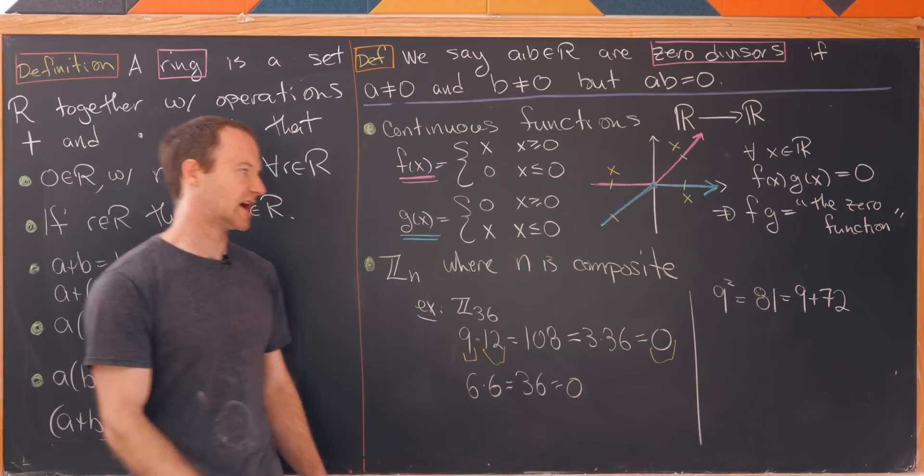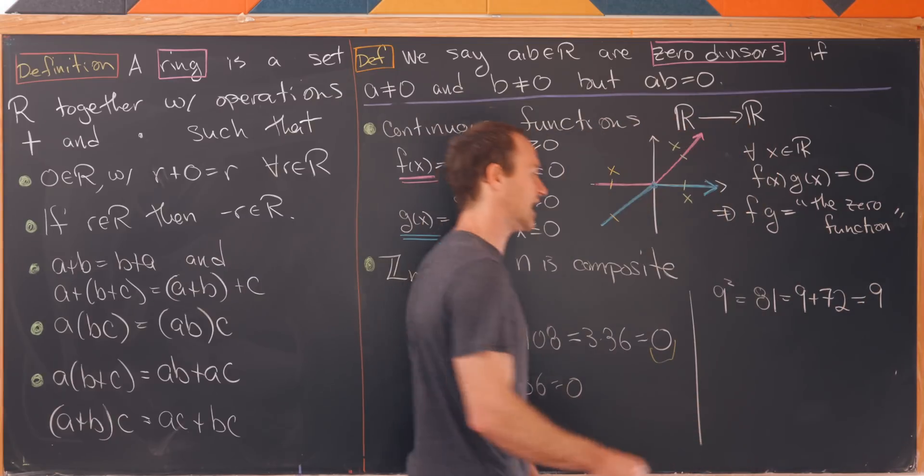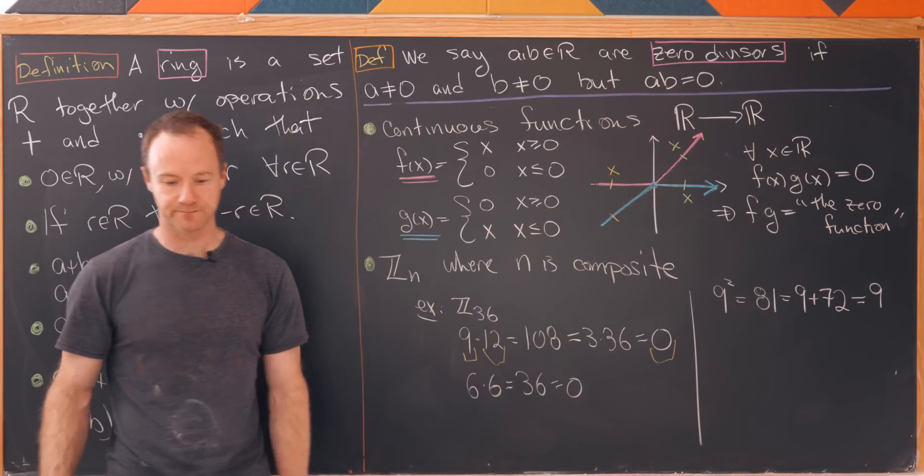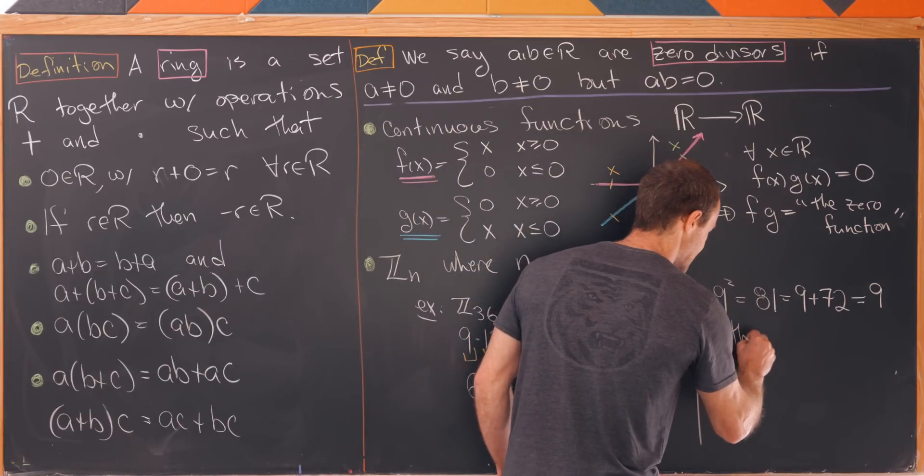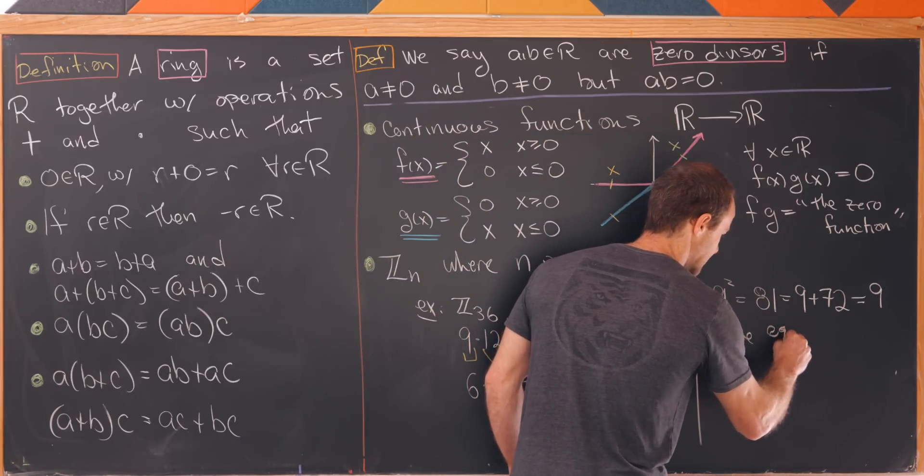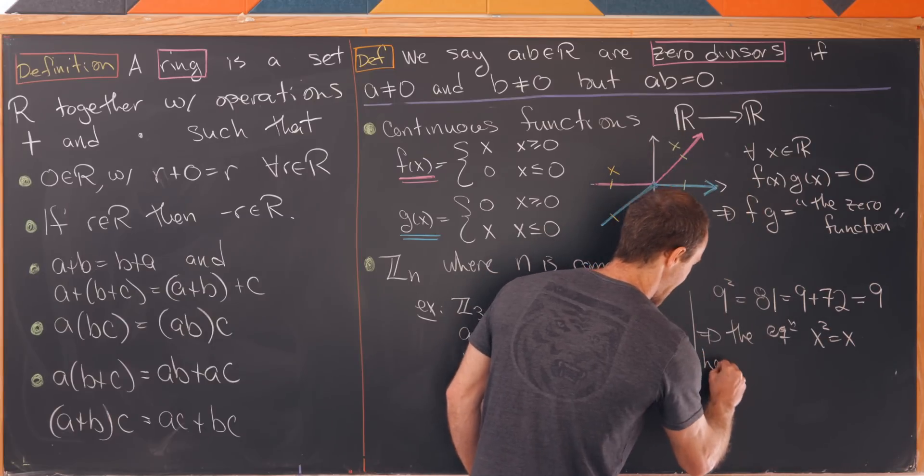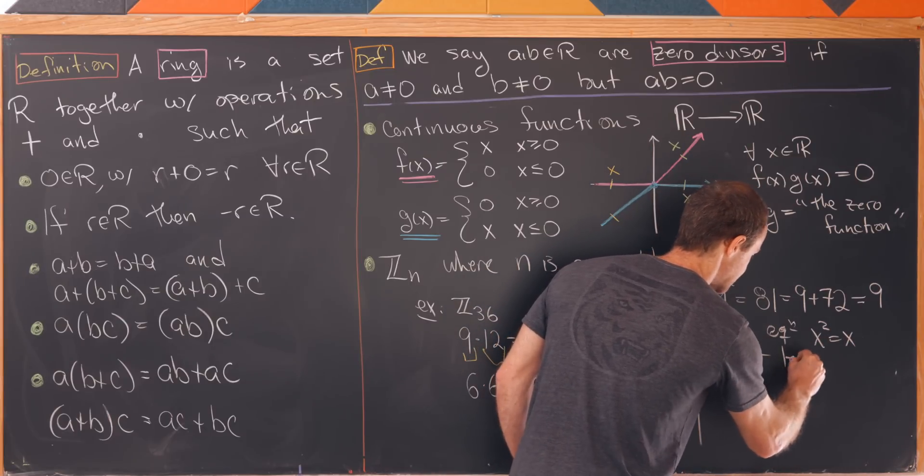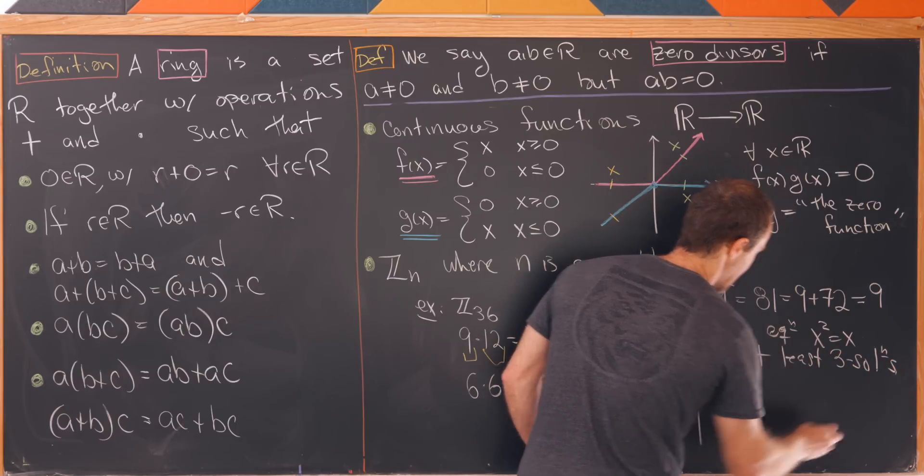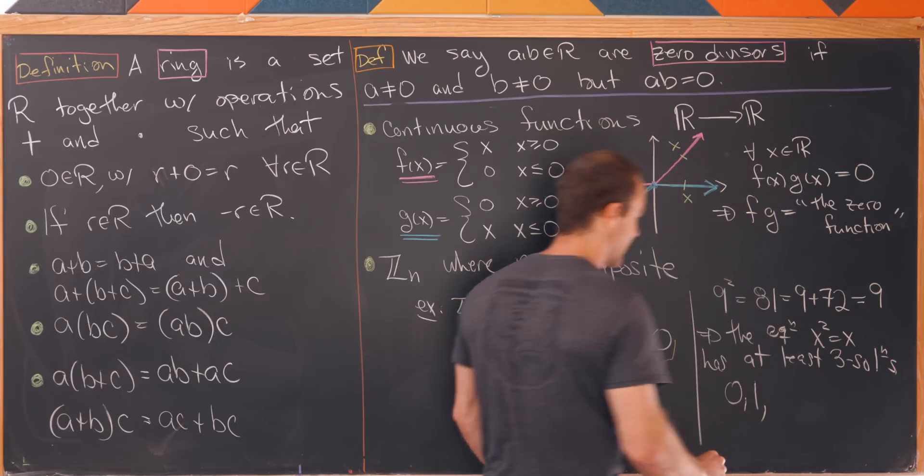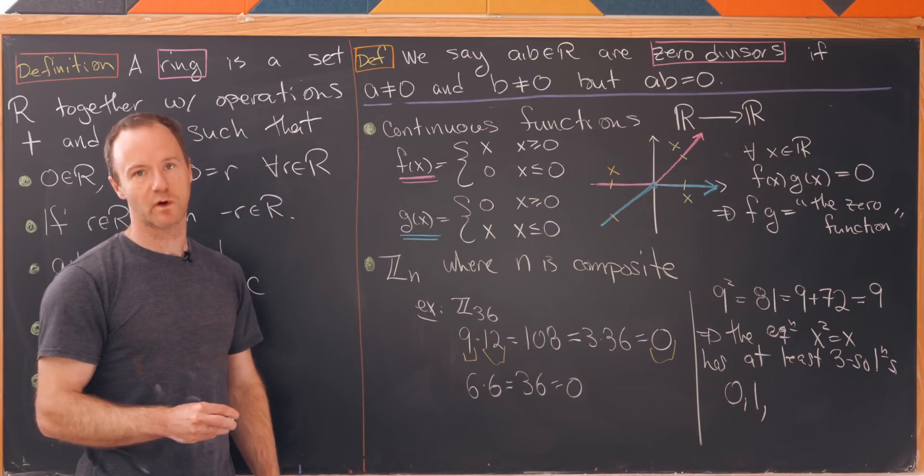Notice that 9 squared is equal to 81 but 81 is the same thing as 9 plus 72. Oh but 72 is the same thing as 36 times 2. So inside of Z_36, 9 squared is equal to 9. But that tells us that the equation defined by x squared equals x has at least three solutions.